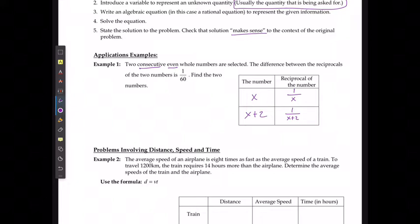If the difference between these reciprocals, so when I'm saying the difference, I'm subtracting them, is 1 over 60 and I need to find the two numbers. Well, I'm going to say 1 over x minus 1 over x plus 2 has to equal 1 over 60. And this is the equation that I'm solving.